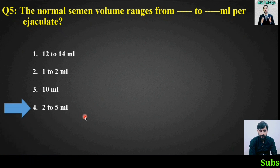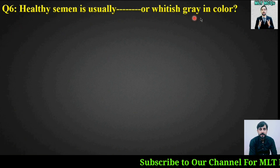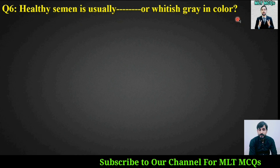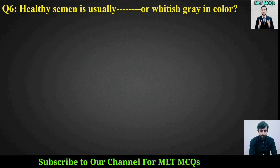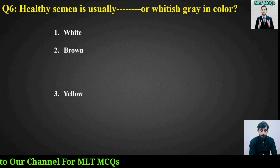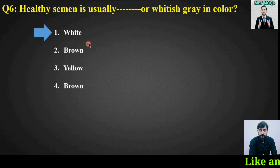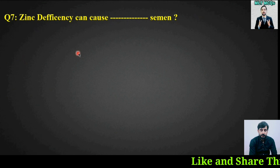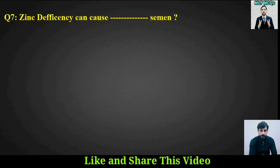MCQ number six: Healthy semen is usually whitish gray or what other color? Options are: white, brown, yellow, or brown. The right answer is option number one — white.